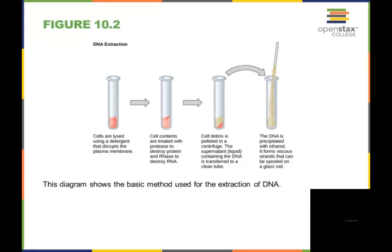The supernatant or the liquid containing the DNA then gets transferred into a clean tube. You can precipitate out the DNA with ethanol and it will form these viscous strands that can be spooled onto a glass rod. You just need to make sure that the ethanol is cool enough and that you're nice and gentle with this.